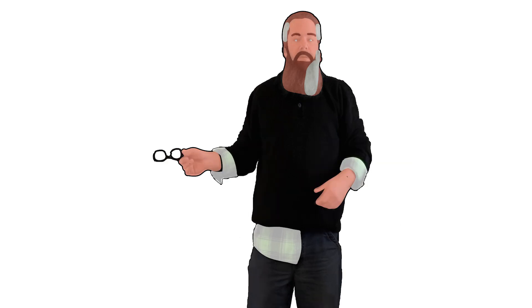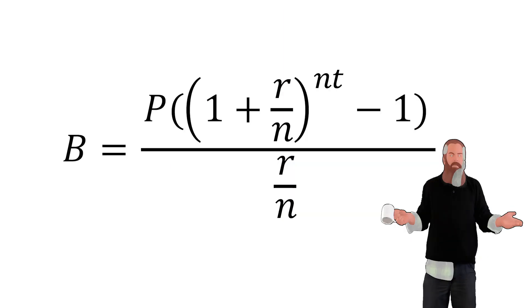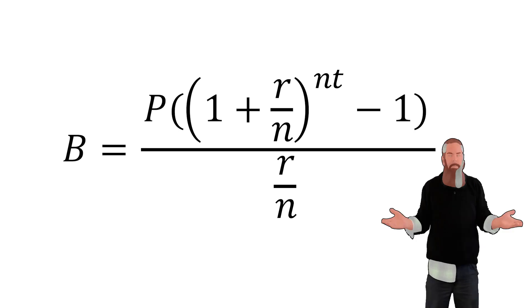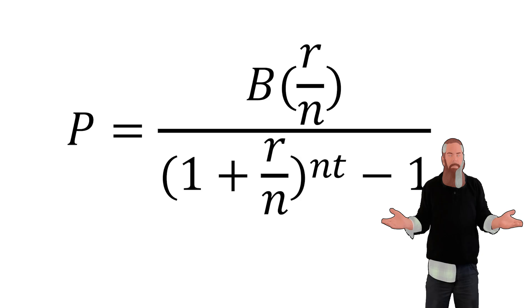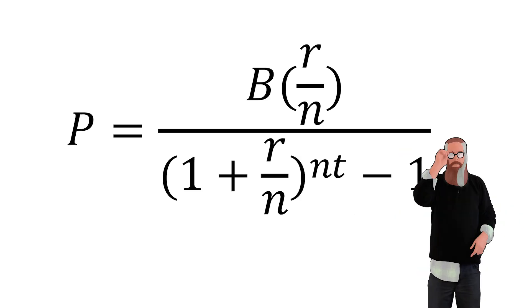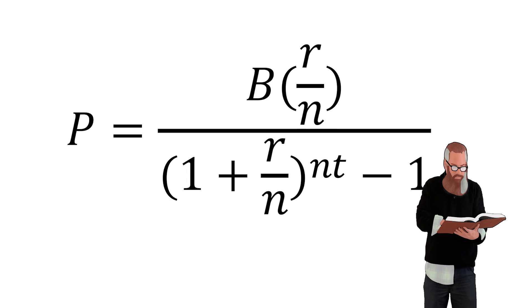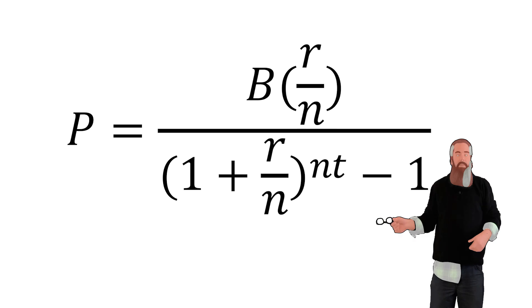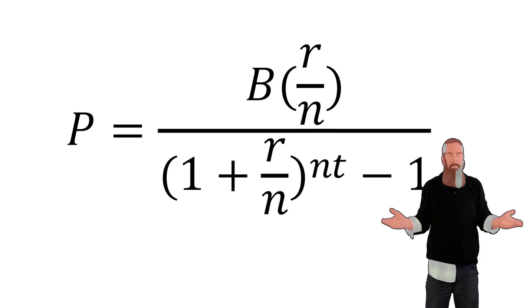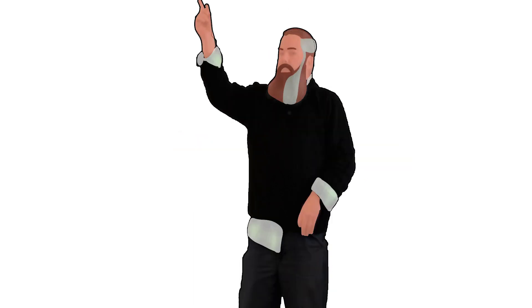In the future value investment lesson, we explored determining a future balance given an interest rate, the compounding period, the term, and the amount of the periodic deposit. The formula for the future value of a periodic deposit is on the screen. In the present value of investments lesson, we explored determining how much you need to deposit periodically to meet a monetary goal given an investment rate, the compounding period, and the term. The formula for the present value of a periodic deposit is on the screen. In each of those situations, the variable t represented time or term and was a fixed amount. In this lesson, we will look at a situation where the term is the dependent variable.